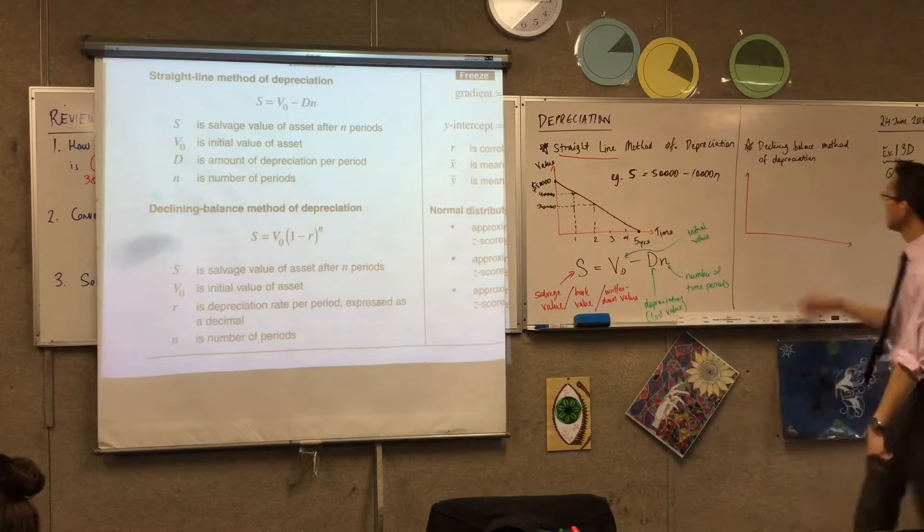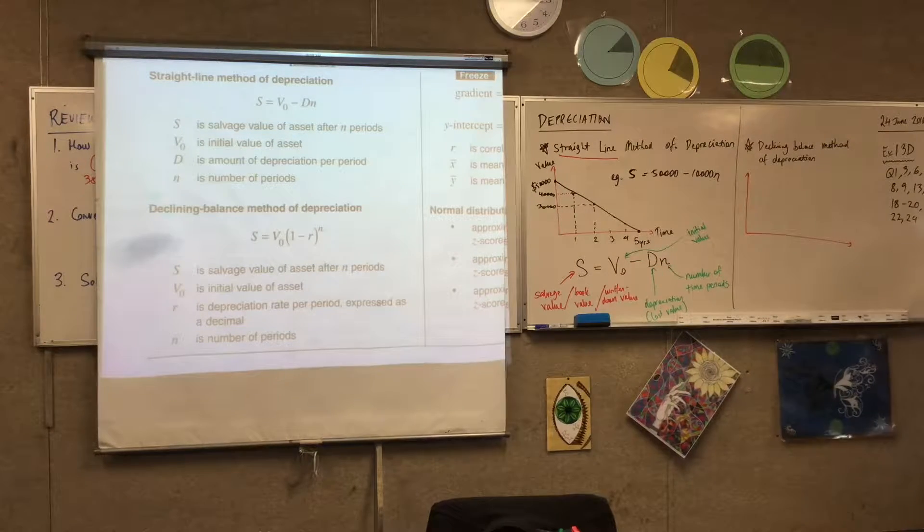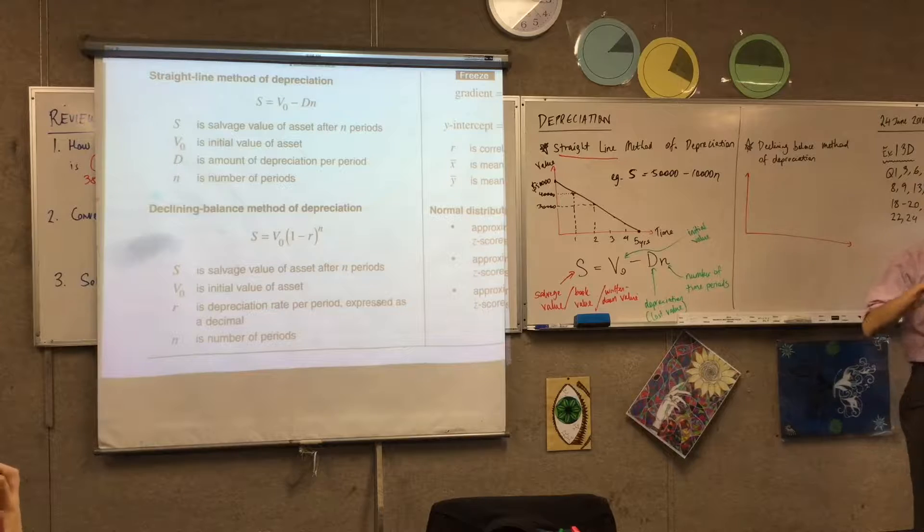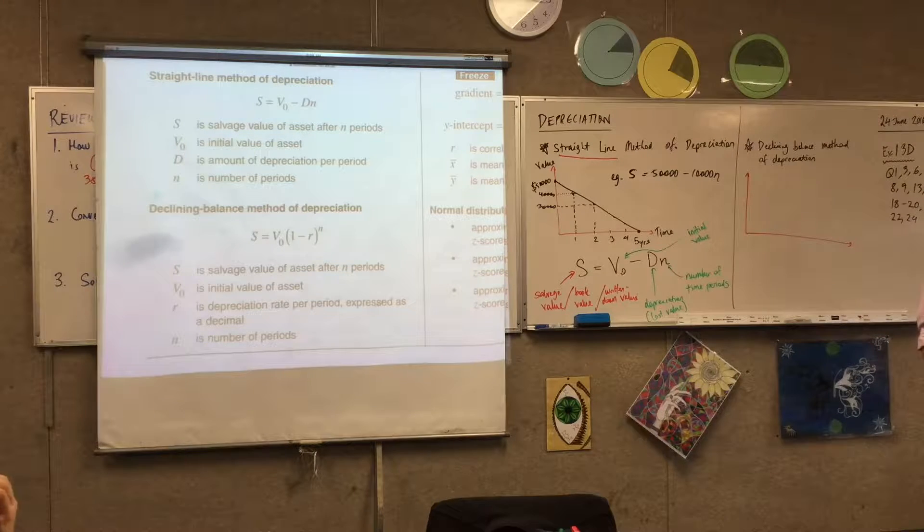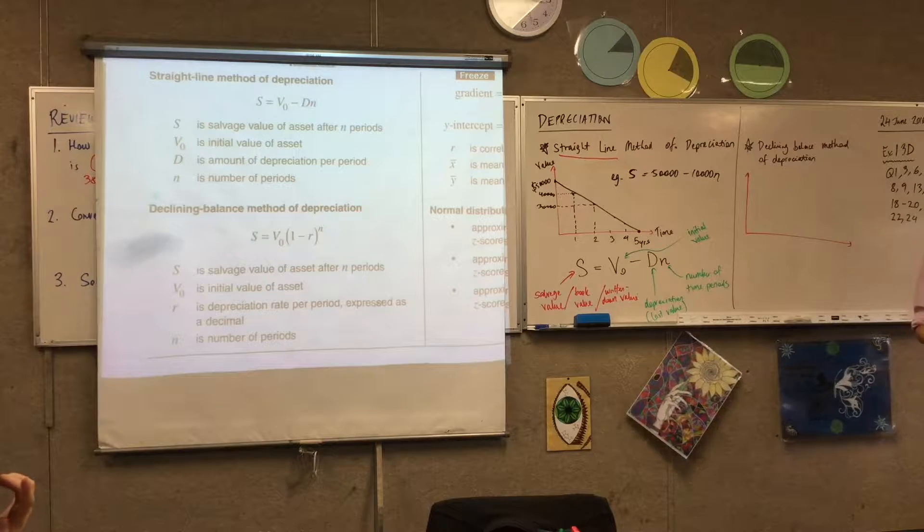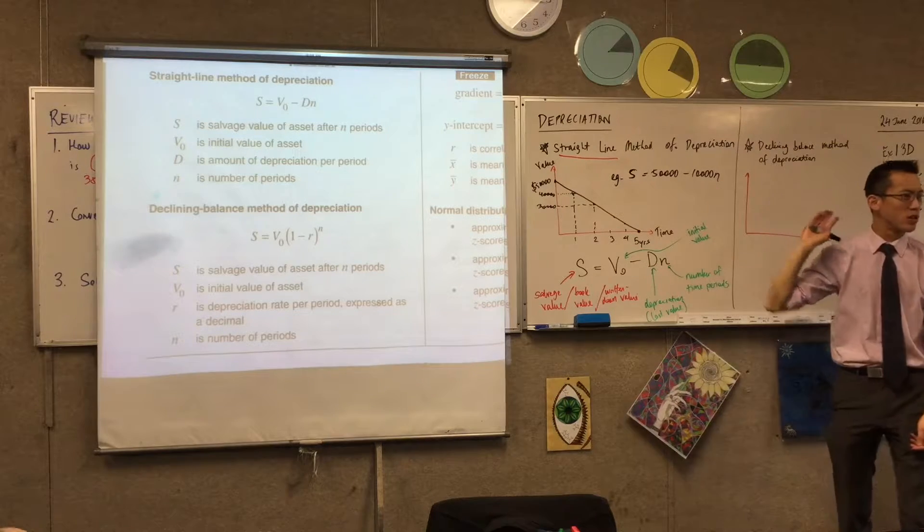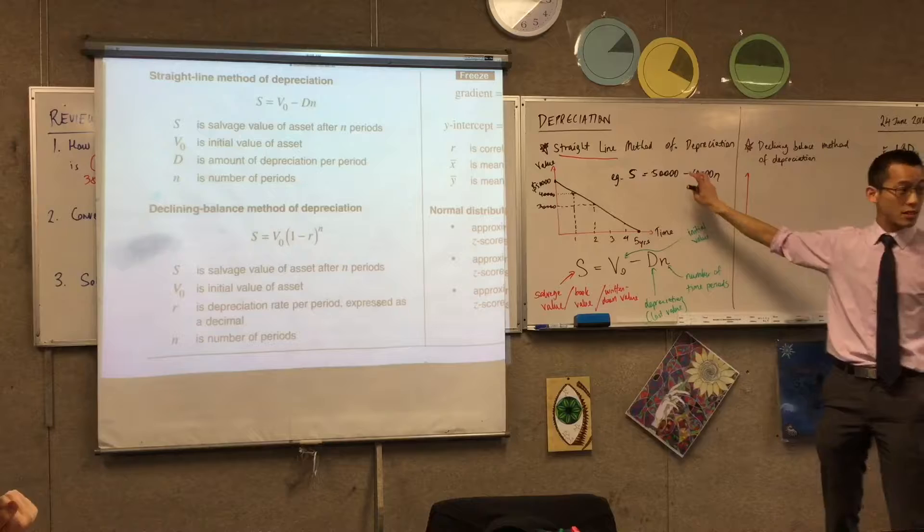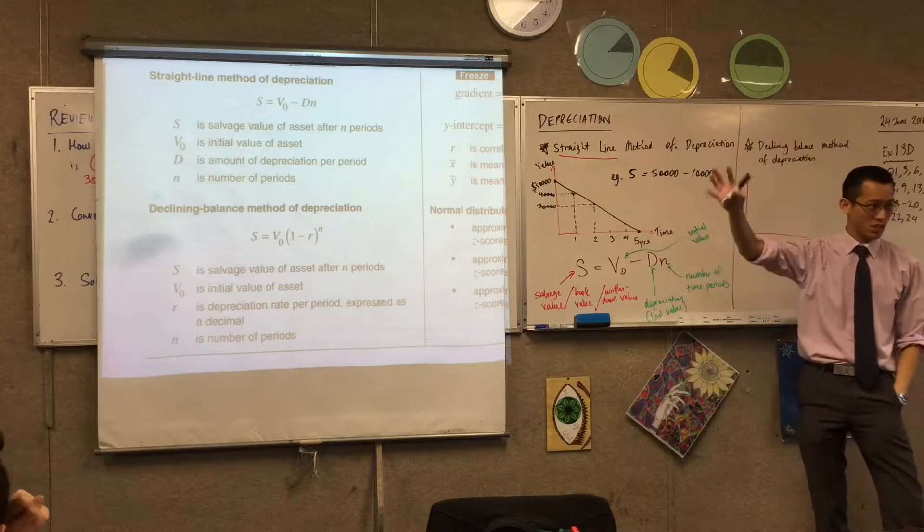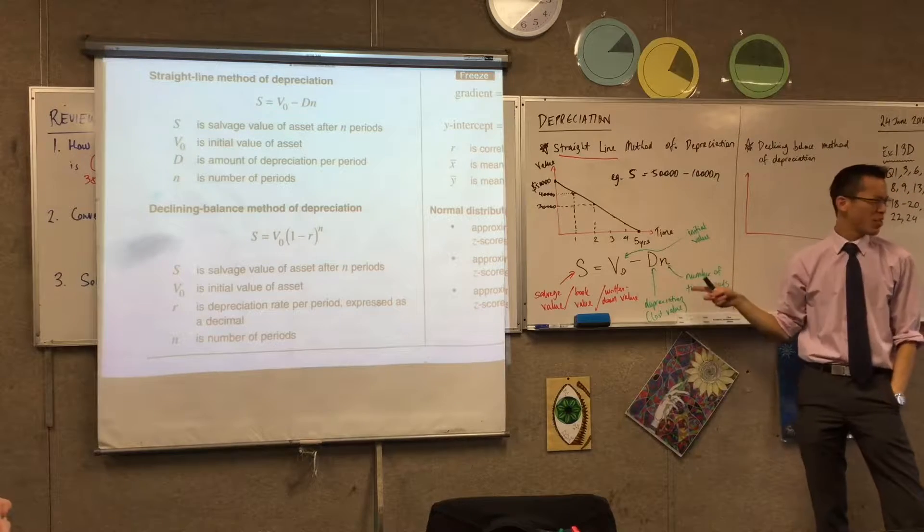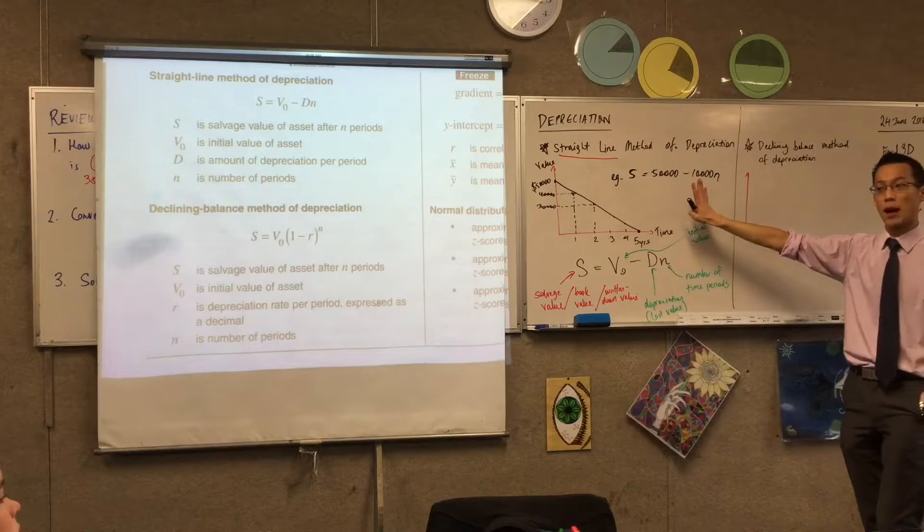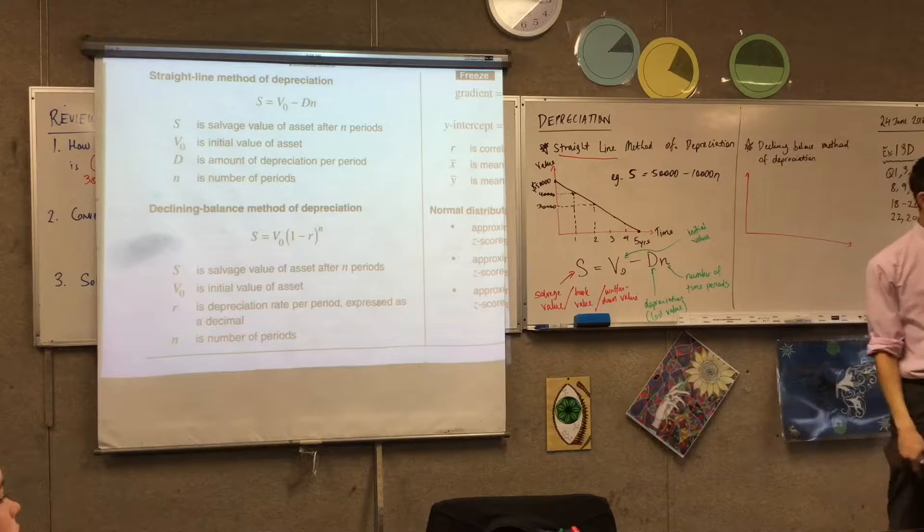We'll get to this formula in a second. Let me explain what this is about. Declining balance is trying to get a more realistic model for how things depreciate. Here we said every year it just loses $10,000. One of the reasons why accountants and tax agents would do this is because it's really easy to work out. It's very simple, and that's why this is the most common way.